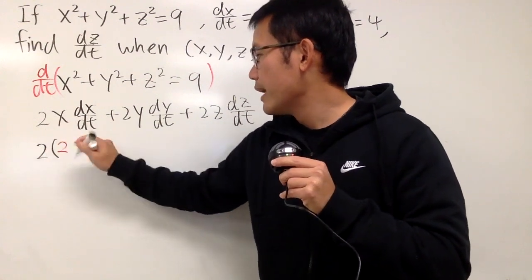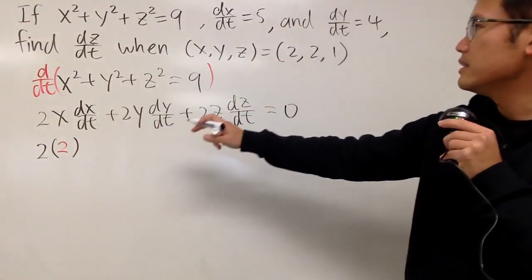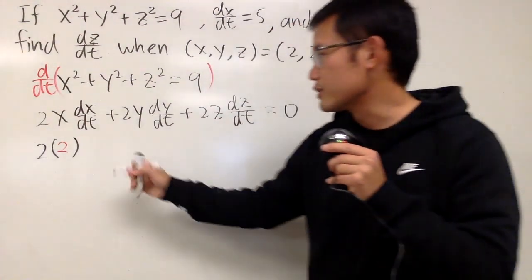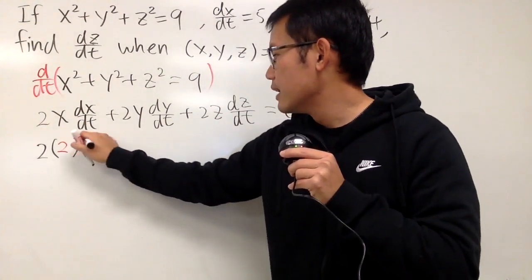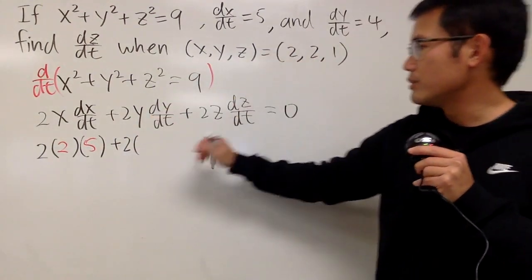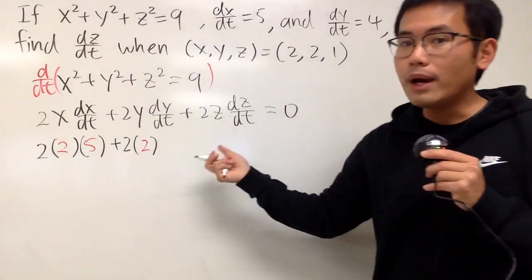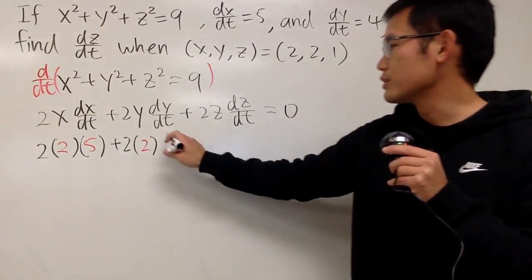So, x is 2, and we also know that dx/dt is 5. So, I'll just put that down right here for you guys. And then plus 2 times y is 2, dy/dt is 4, so we'll just put this down right here.